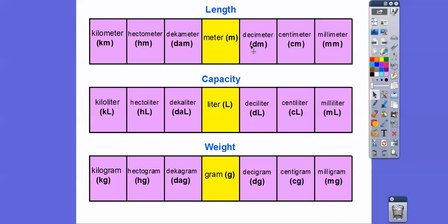Here they are separated. Meters represent length. Liters represent capacity, usually in fluid — like a liter of milk or soda. This is kilometers, kiloliters, and kilograms. As we go this way we multiply by 10; as we go the other way we divide by 10, each time.